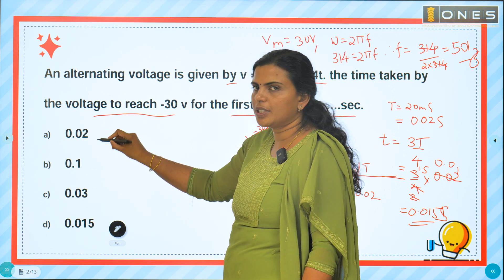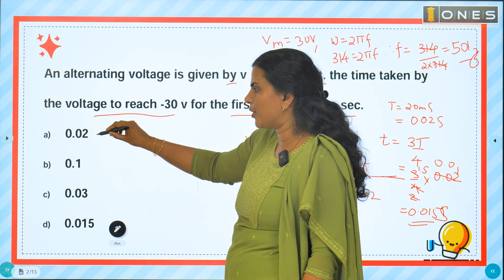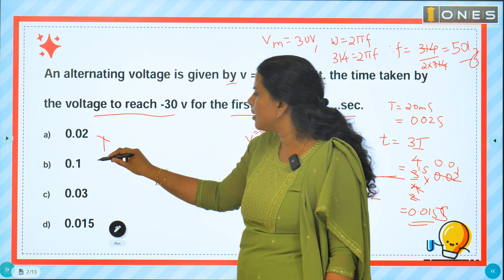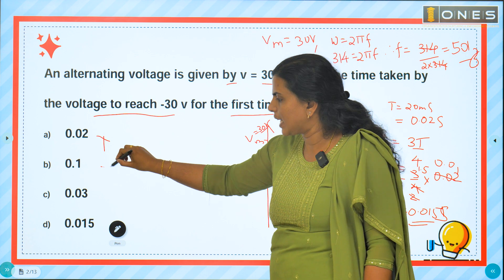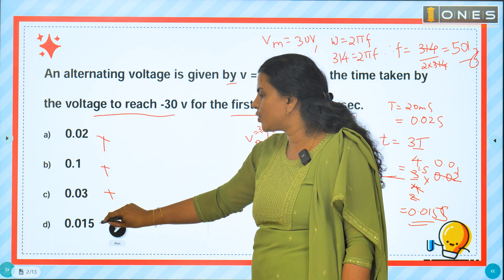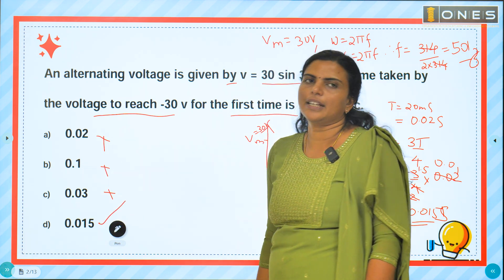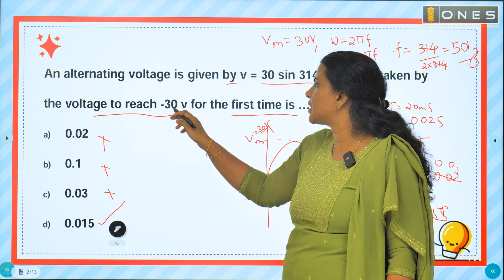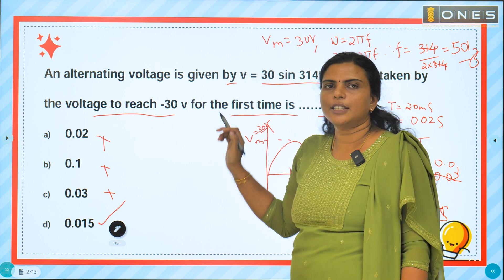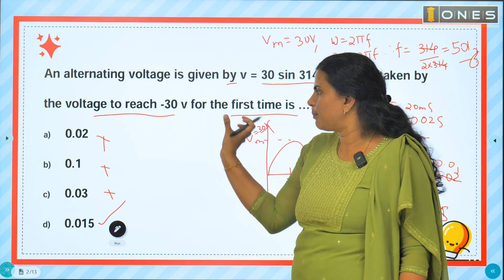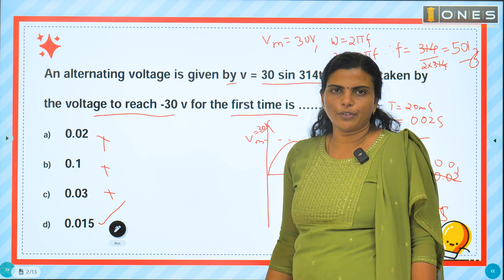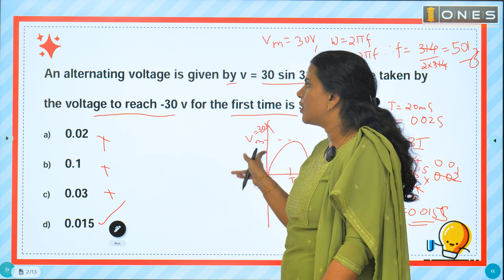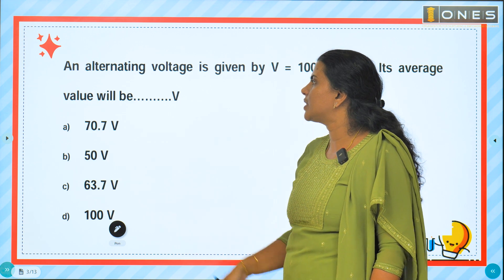Looking at the options: 0.02 second, 0.1 second, 0.03, or 0.015 second. The correct answer is 0.015 second, which is the time to first reach minus 30 volt. We'll move to the next question.